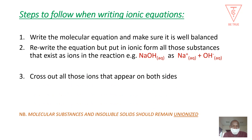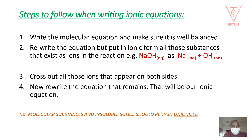Step three: cross out all those ions that appear on both sides of your equation. Step four: rewrite the equation that remains after crossing out those ions — whatever you are left with will be your ionic equation. Remember, substances that are insoluble, like insoluble solids such as zinc or copper oxide, are written as un-ionized solids; don't break them into ions.